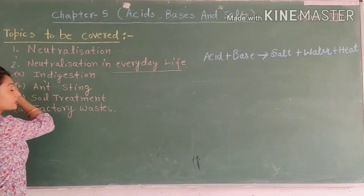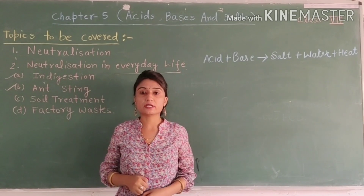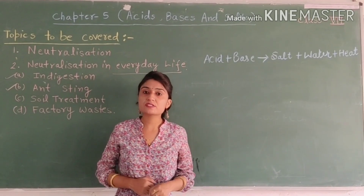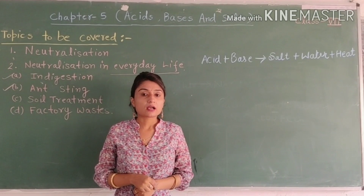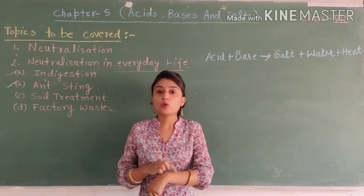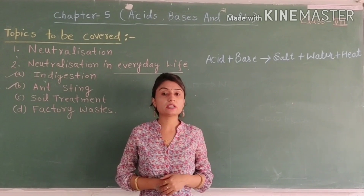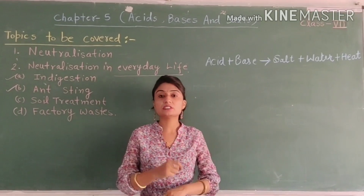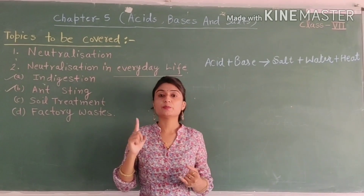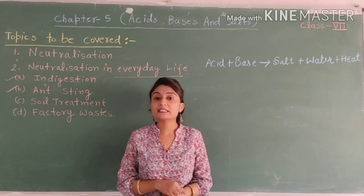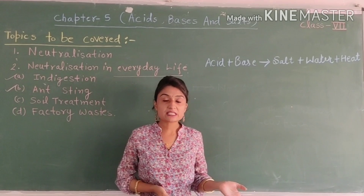The next example is insect stings. When an insect stings, formic acid is released into the skin. To reduce the effect of this formic acid, we need to apply a base. We can apply baking soda, which is sodium bicarbonate. We can also apply calamine solution, because calamine solution contains zinc carbonate, which is basic in nature, and it neutralizes the formic acid.